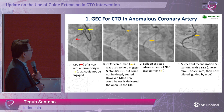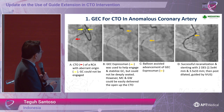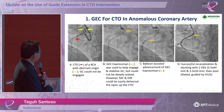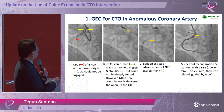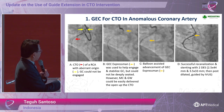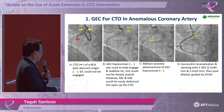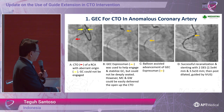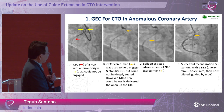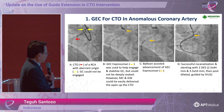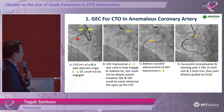This is an example of the use of guide extension for CTO in an anomalous coronary artery. The guiding catheter cannot be engaged to the ostium of the right coronary artery due to its aberrant origin, so we used the Expressman guide extension catheter. We advanced our micro catheter and guide wire to open the CTO. Then, while inflating the balloon, we advanced the Expressman deeper and finished the case beautifully with implantation of two overlapping DES.